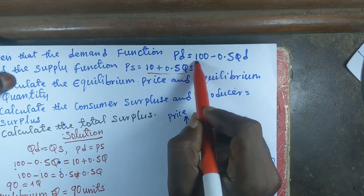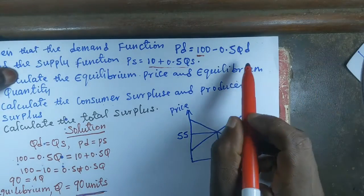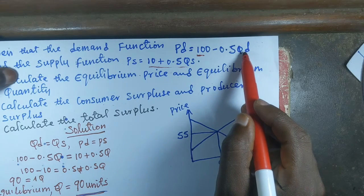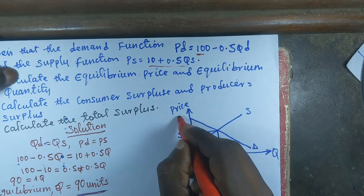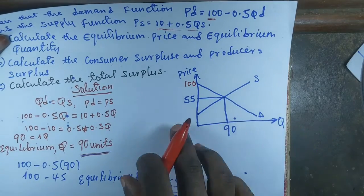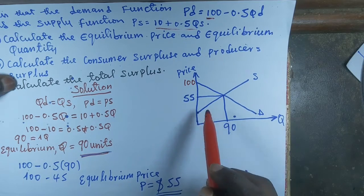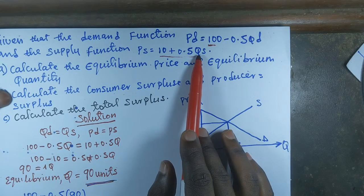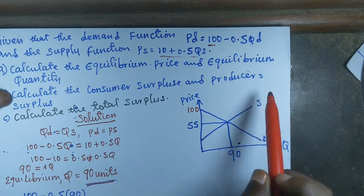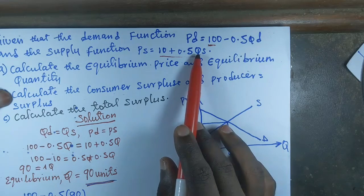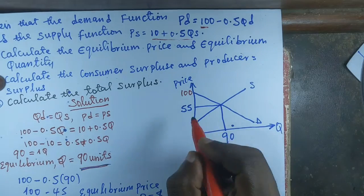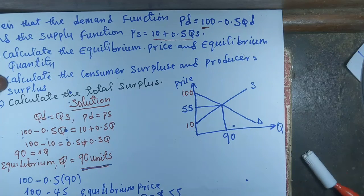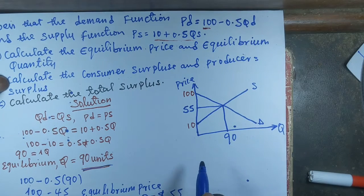Now we need to find the price intercepts. The price intercept in the demand function is the point where quantity is zero. When we insert zero, 0.5 multiplied by zero gives us zero, and we are left with 100. For the supply function, when quantity is zero, 0.5 times zero is zero, leaving us with 10. So the price intercepts are 100 for demand and 10 for supply.